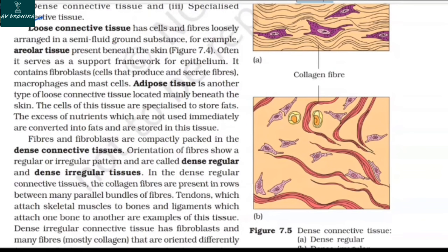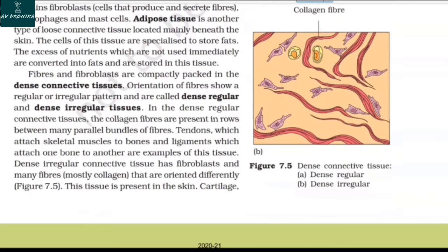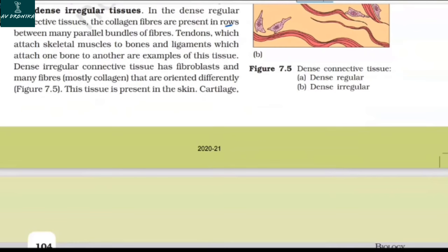Adipose tissue is another type of loose connective tissue located mainly beneath the skin. The cells of this tissue are specialized to store fats; excess nutrients not used immediately are converted into fats and stored here. In dense connective tissue, fibers and fibroblasts are compactly packed. Orientation of fibers shows a regular or irregular pattern, giving rise to dense regular and dense irregular tissues. In dense regular connective tissue, collagen fibers are present in rows between many parallel bundles. Tendons attach skeletal muscles to bones, and ligaments attach one bone to another — both are examples of this tissue.